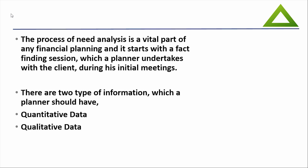On to the academic part: the process of need analysis is a vital part of any financial planning and it starts with a fact-finding session which a planner undertakes with the client during initial meetings. There are two types of information a planner should have. First is quantitative data — family income, family expenses, loans outstanding, goals, education funding, marriage funding, and many more. The other is qualitative data, which covers the individual's personal information.